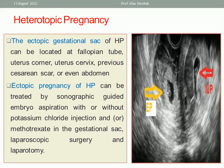The ectopic gestational sac of a heterotopic pregnancy can be located in the fallopian tube, uterine cornu, cervix, previous cesarean scar, or abdomen. Treatment options include sonographically guided embryo aspiration with or without potassium chloride injection, local methotrexate injection into the gestational sac, and laparoscopic or open surgery.